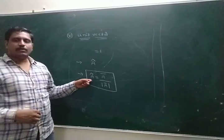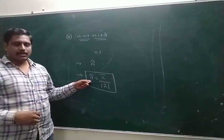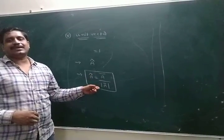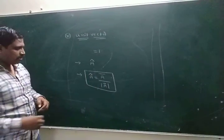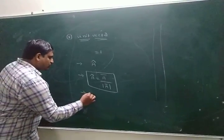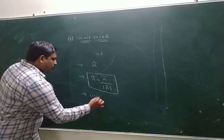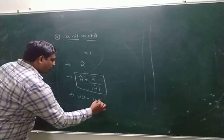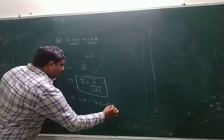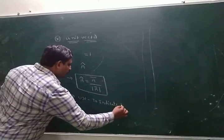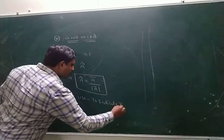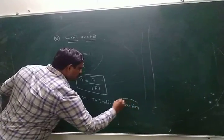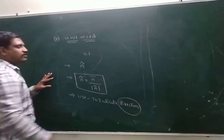What is the formula for unit vector? A_cap equals a_bar divided by modulus a_bar. What is the use of this unit vector? A unit vector is used to indicate the direction of a body.